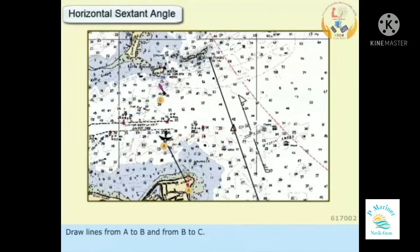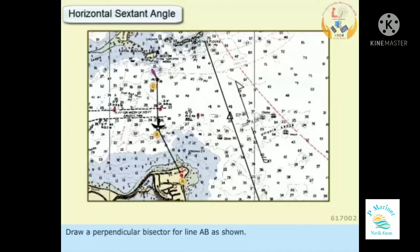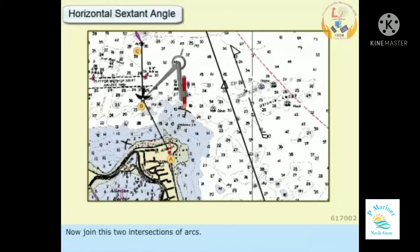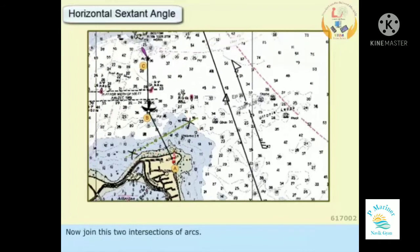Draw lines from A to B and from B to C. Draw a perpendicular bisector for line AB. Use the radius on the compass, roughly more than half of the line AB, and draw arcs on both sides. Now join these two intersections of arcs.